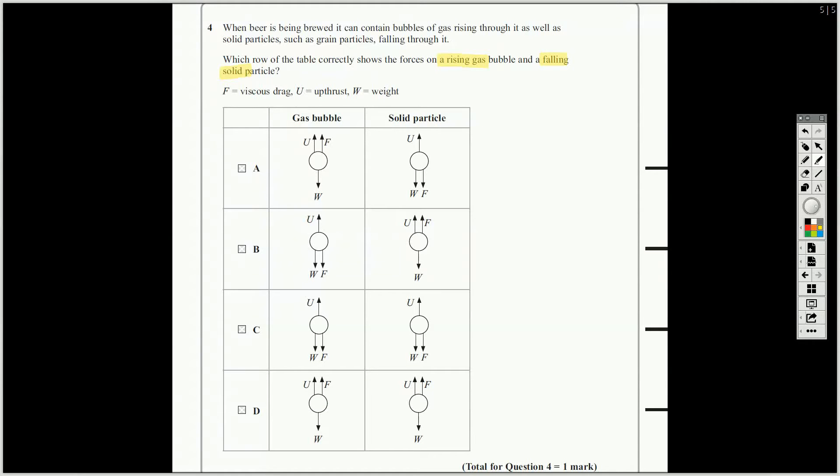Okay, but the solid particle is falling, so the drag should be against that. Drag always opposes motion. So, let's just find the ones where the drag is opposing the motion. This is rising, drags against that, drags downwards, and this is falling, so drag is upwards. So, the answer is B.